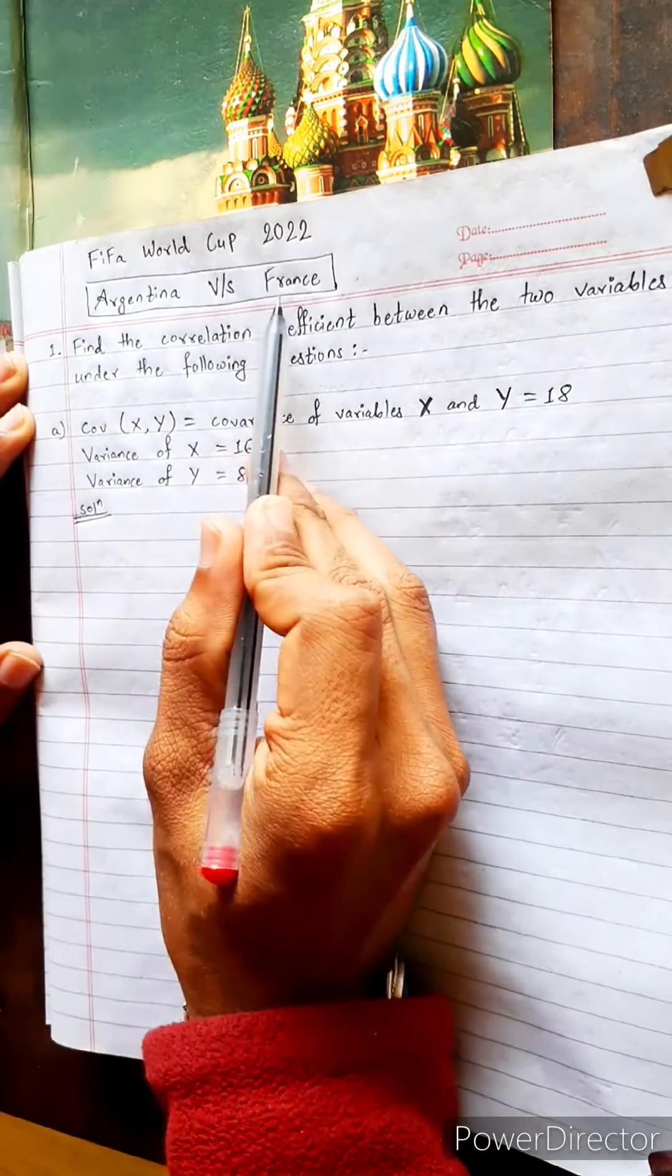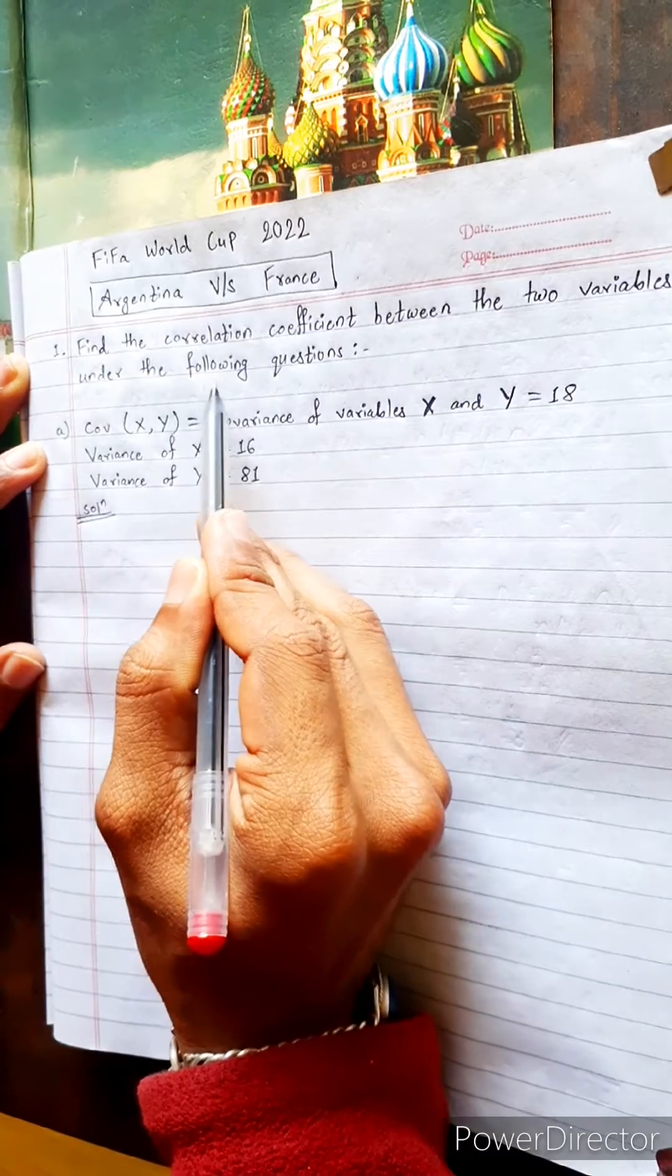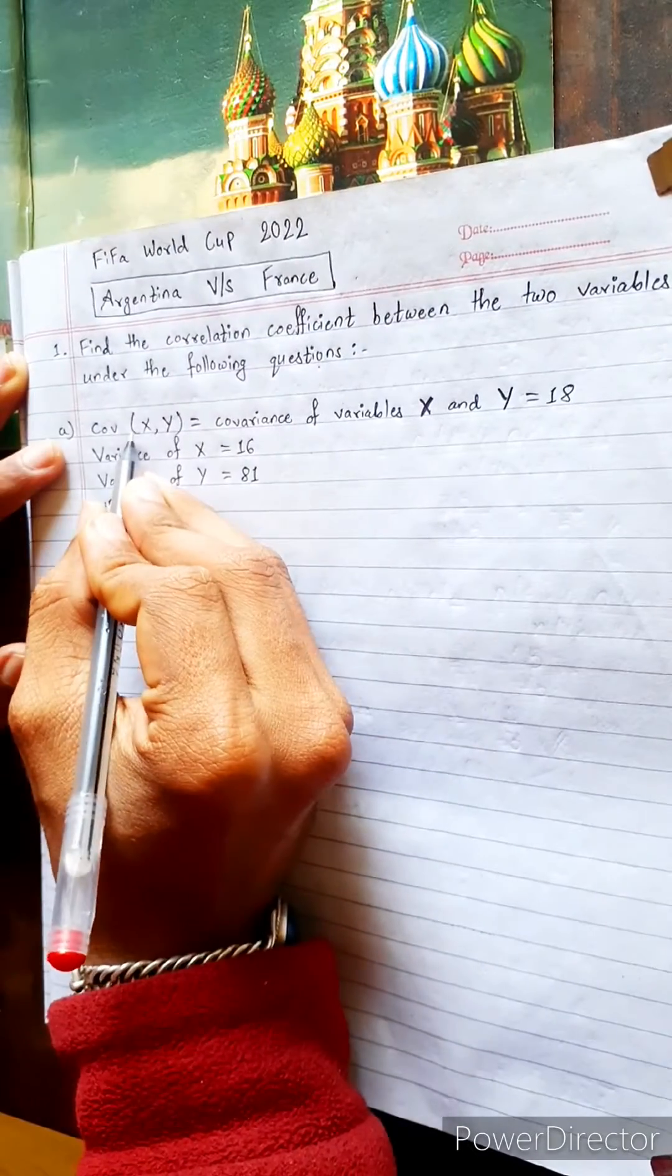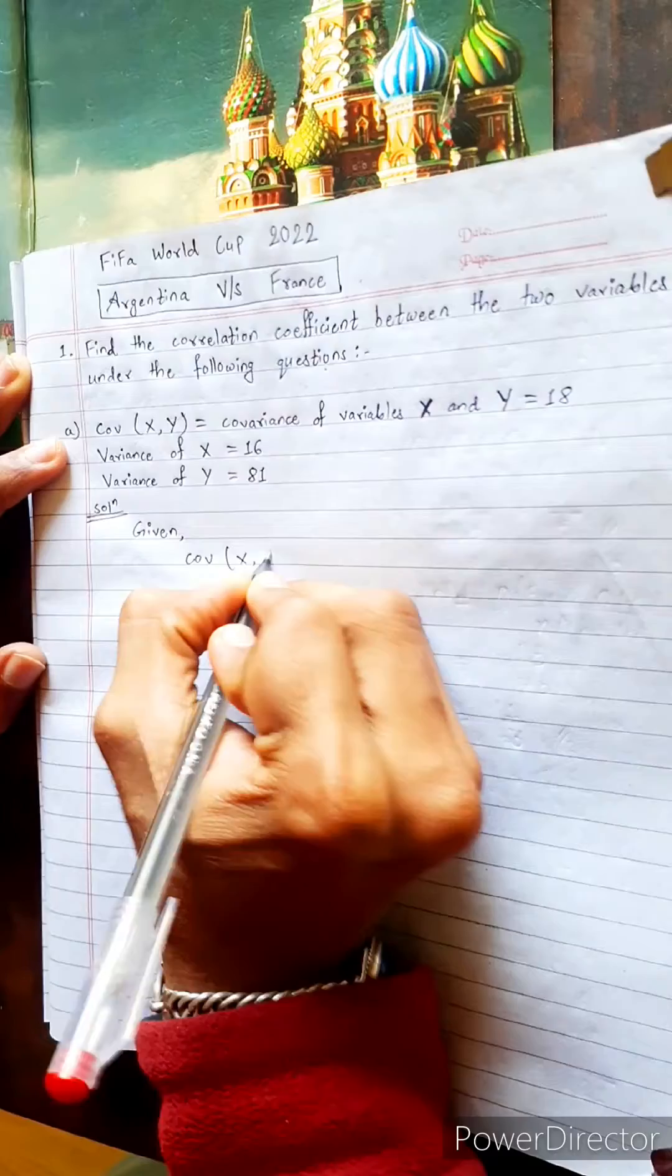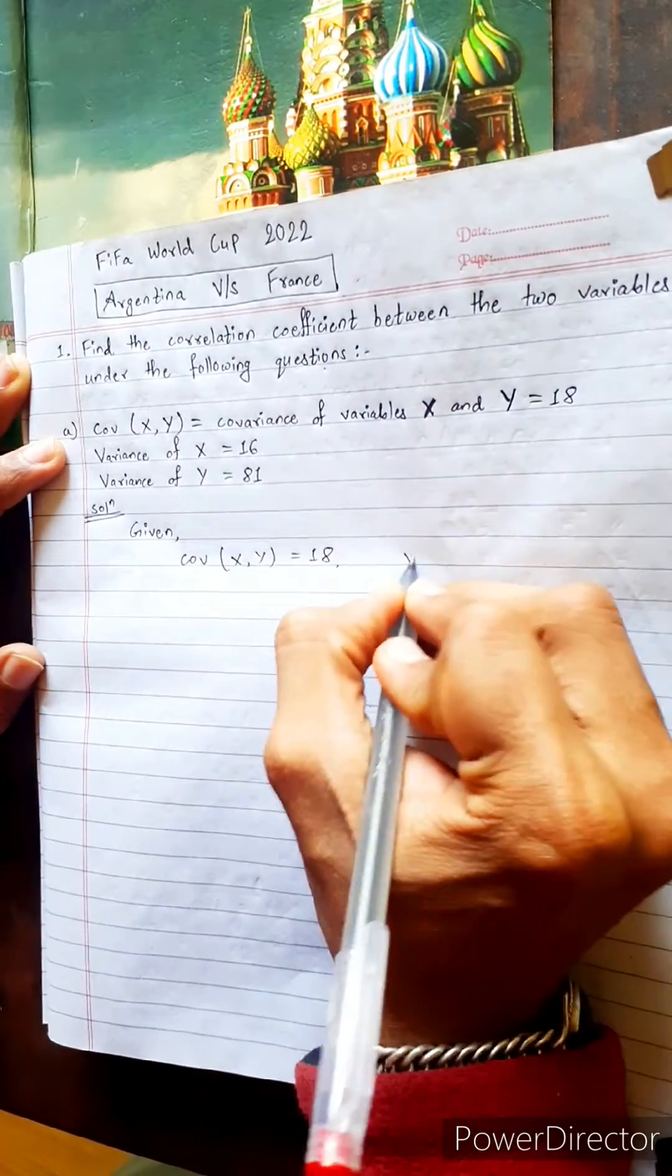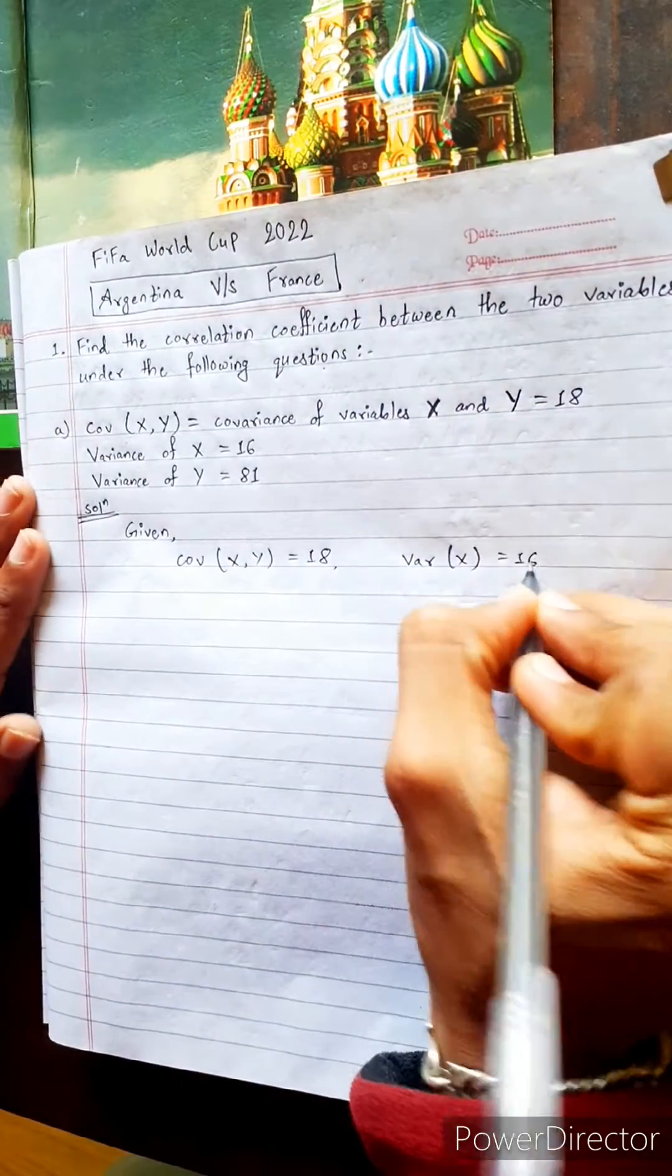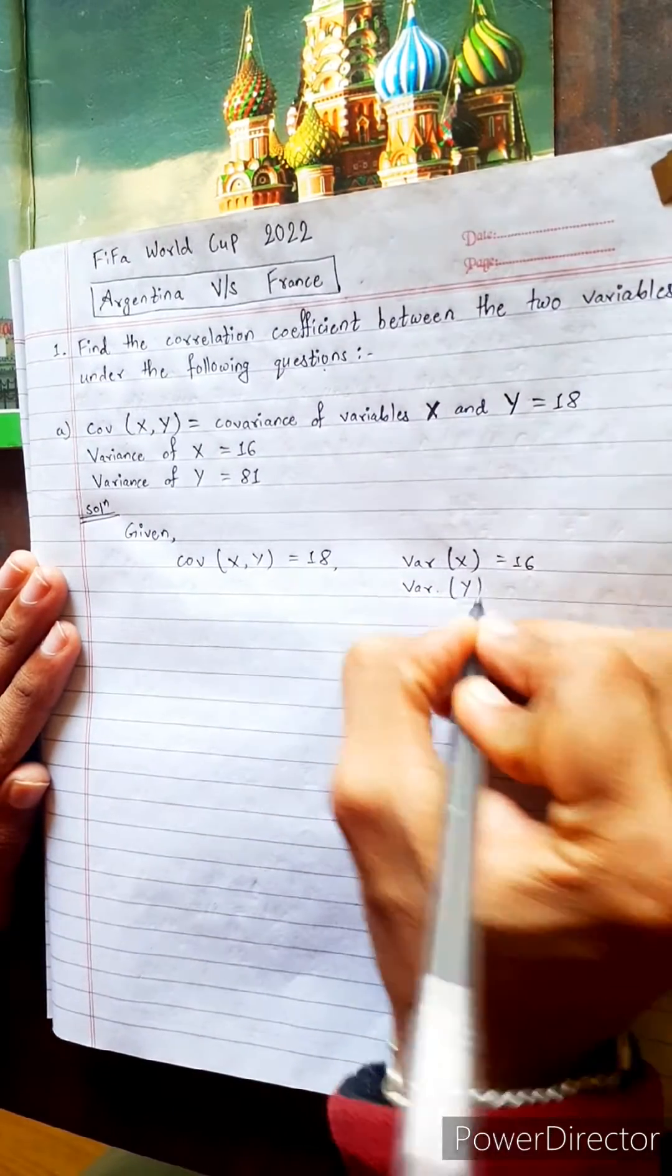Welcome to FIFA World Cup Qatar. Find the correlation coefficient between two variables under the following question. First, we should write what is given. The covariance of X and Y is given as 18, and also the variance of X is 16, and the variance of Y is 81.